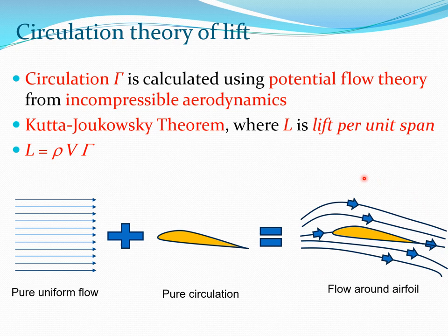To understand the Kutta-Joukowski theorem physically, we look at what actually happens in flow around an airfoil. For attached inviscid flow, the flow can be thought of as having two components: it is essentially a summation of a pure uniform flow and a pure circulation. Adding these two together gives the flow around the airfoil section.